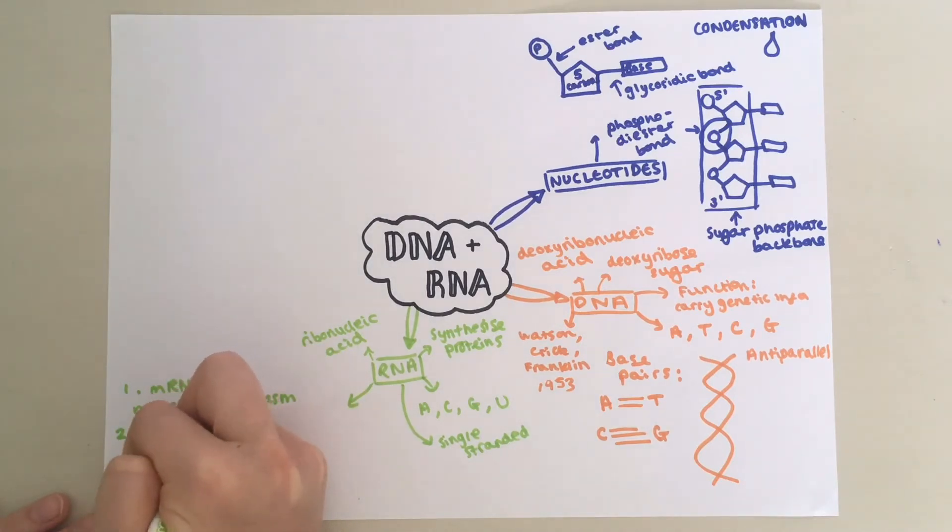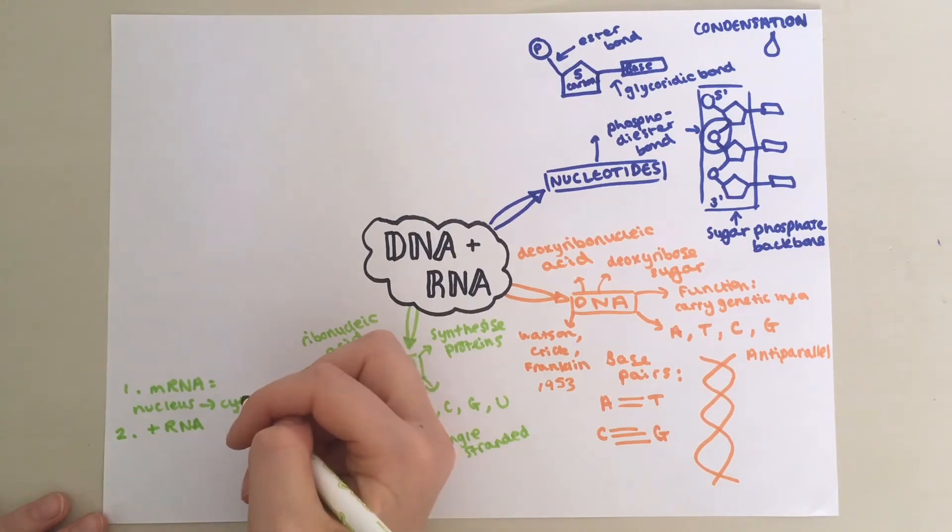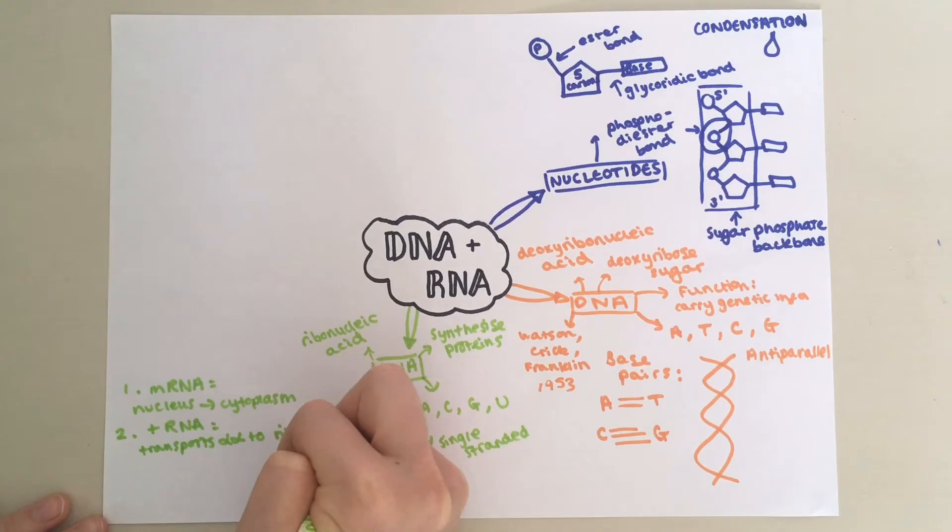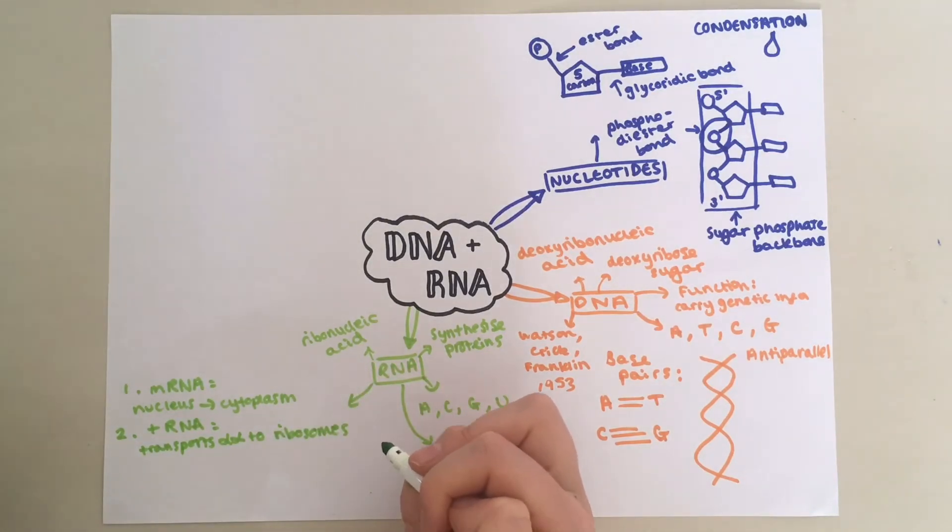Secondly, you've got transfer RNA, tRNA. This basically transports amino acids to the ribosomes and positions the amino acids in the correct place on the chain.